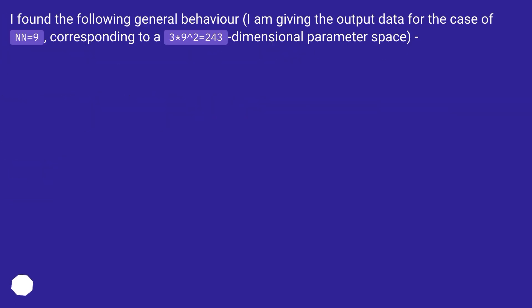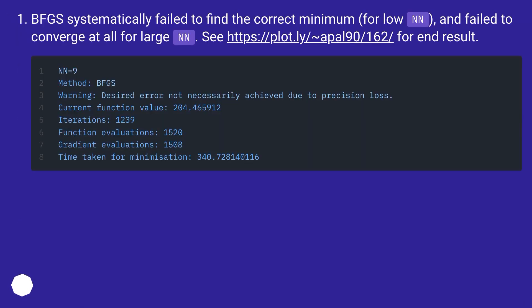I found the following general behavior. I am giving the output data for the case of nn=9, corresponding to a 3×9²=243 dimensional parameter space. BFGS systematically failed to find the correct minimum for low nn, and failed to converge at all for large nn.